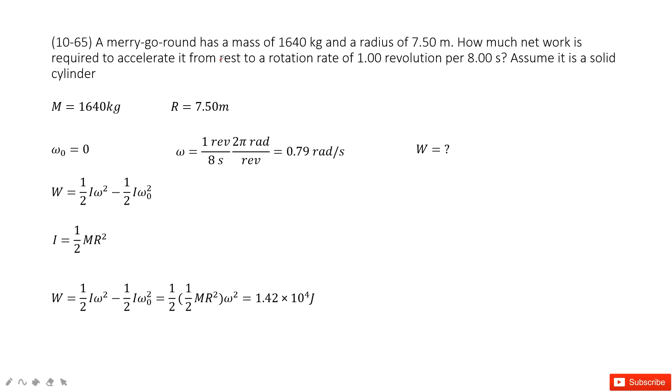You tell us we have the merry-go-round. The mass is given, radius is given. And ask you how much net work is required for this merry-go-round just changes from the stationary to the angular velocity. This one, right? It's one revolution per 8 second. So there we must convert the unit revolution per second to unit radians per second.